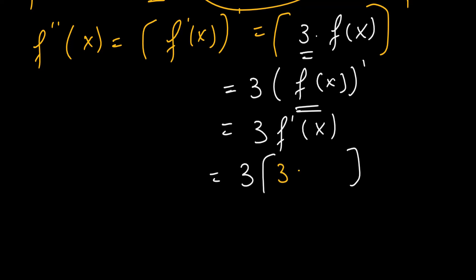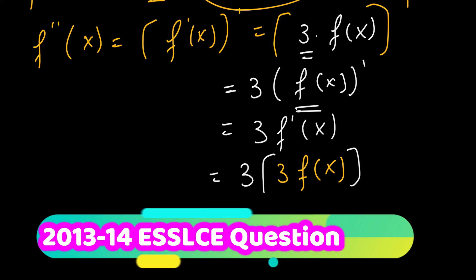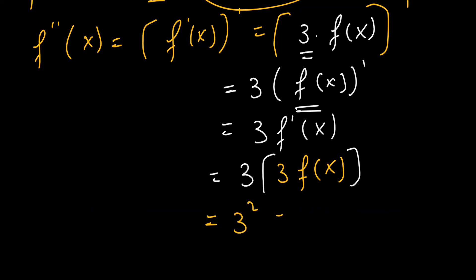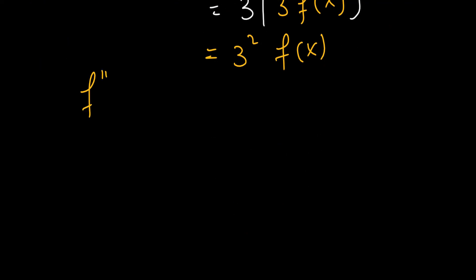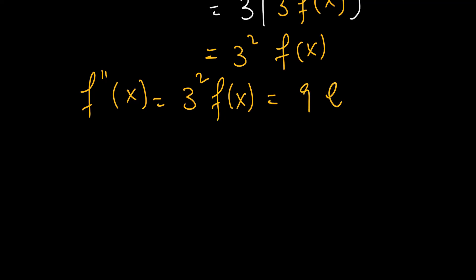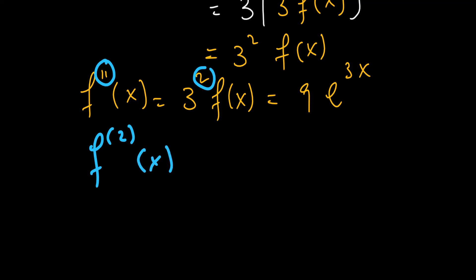The first derivative is 3 times f(x), so the second derivative involves 3 times 3, which is 3 squared. The second derivative of the given function, the natural exponential function, is 3² · f(x), which equals 9e^(3x). We associate this second derivative with degree 3²: f''(x) = 3² · e^(3x), where 3 is a constant and the function itself does not change.